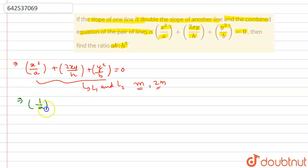This becomes 1/a + 2y/(hx) + y²/(x²b) = 0.